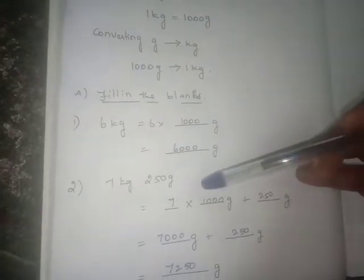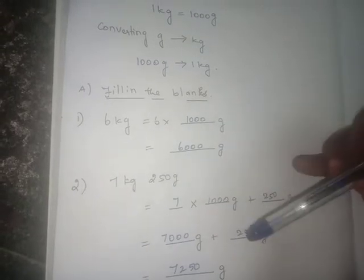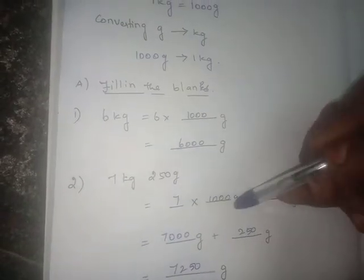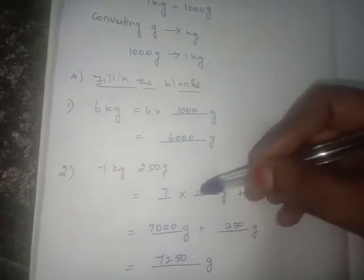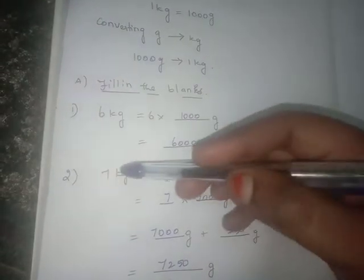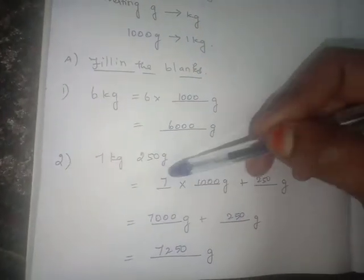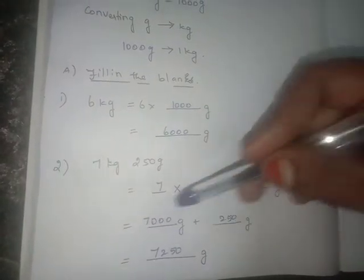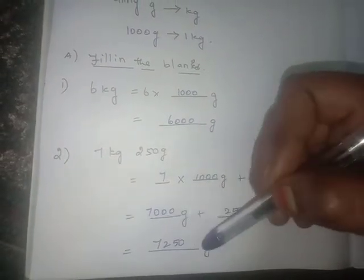The next question: seven kilogram two hundred fifty gram. When a question has both kilograms and grams, first split the kilogram and gram separately. The gram part — two hundred fifty gram — stays the same, because everything is being converted to gram. For the kilogram part, seven kilograms becomes seven into one thousand grams, which is seven thousand grams. Then seven thousand plus two hundred fifty gives seven thousand two hundred fifty grams.